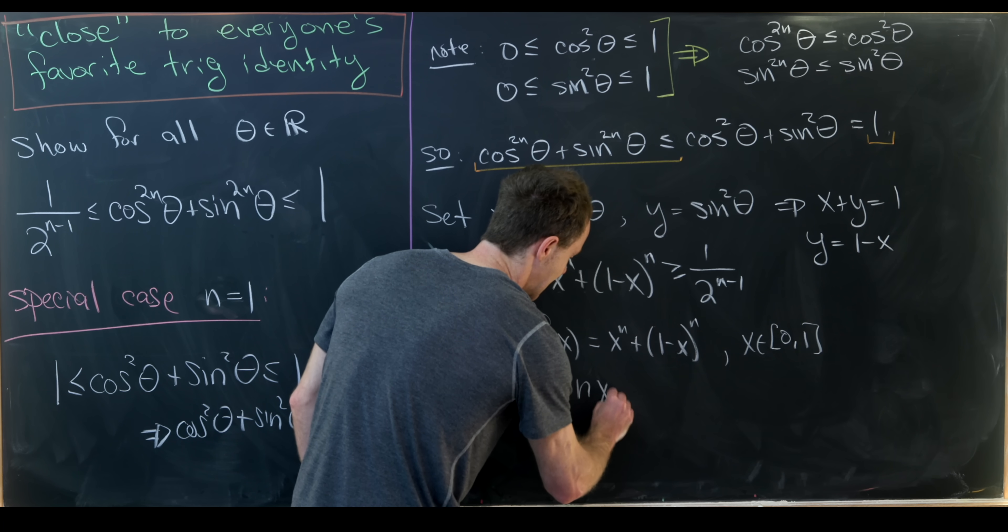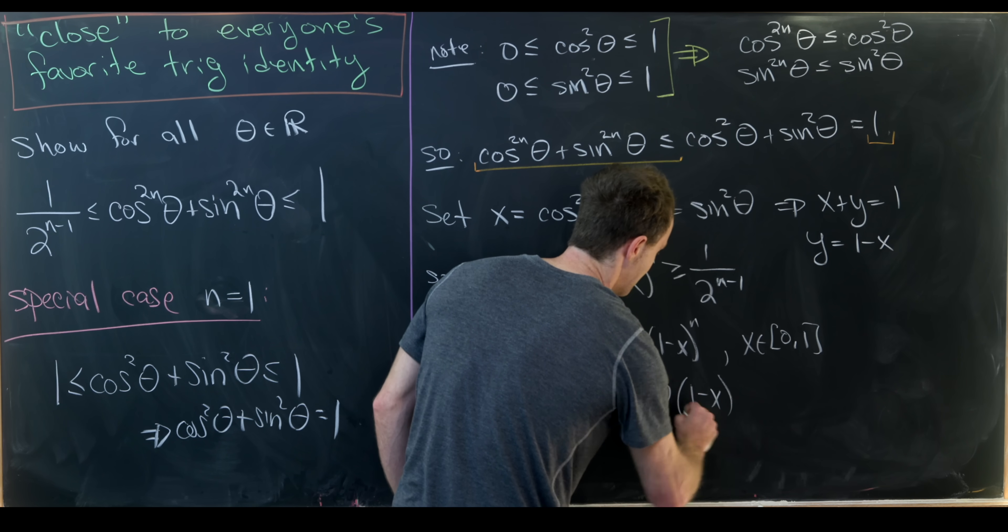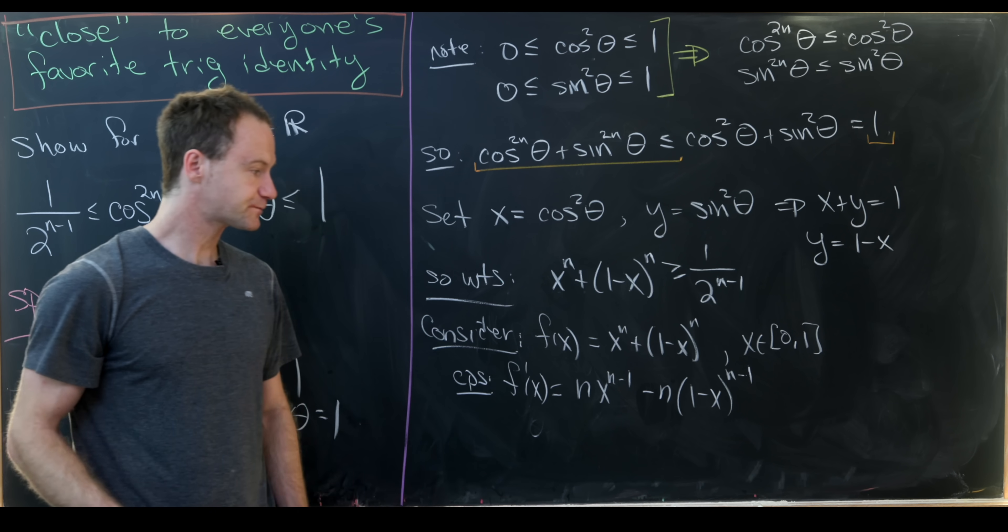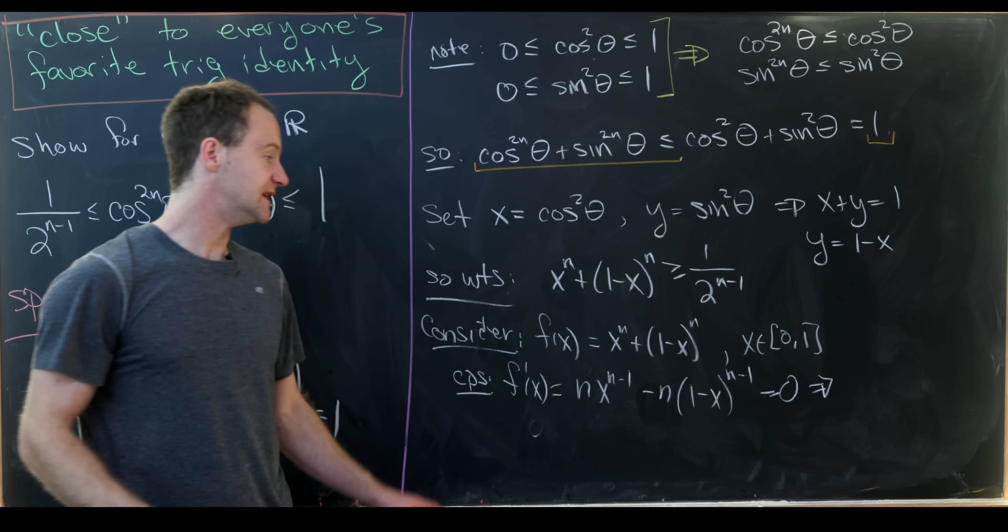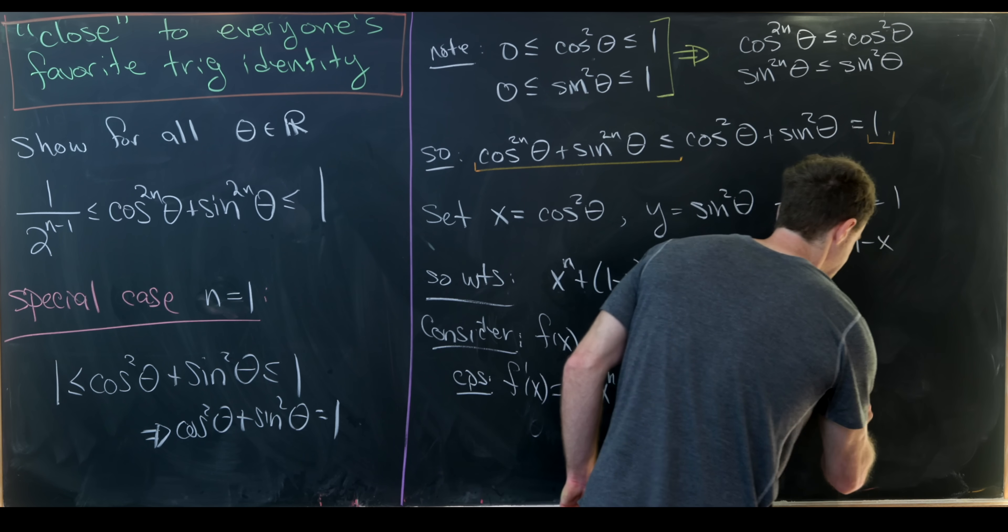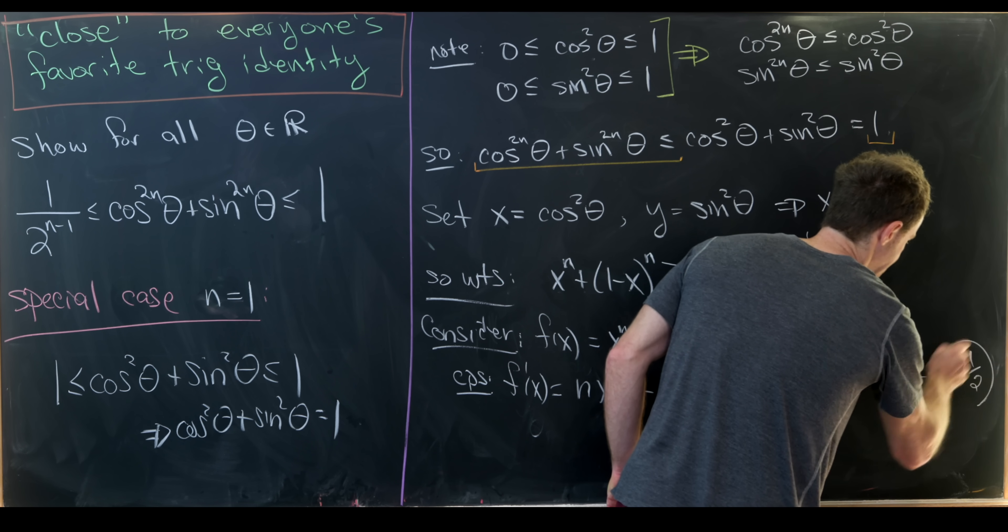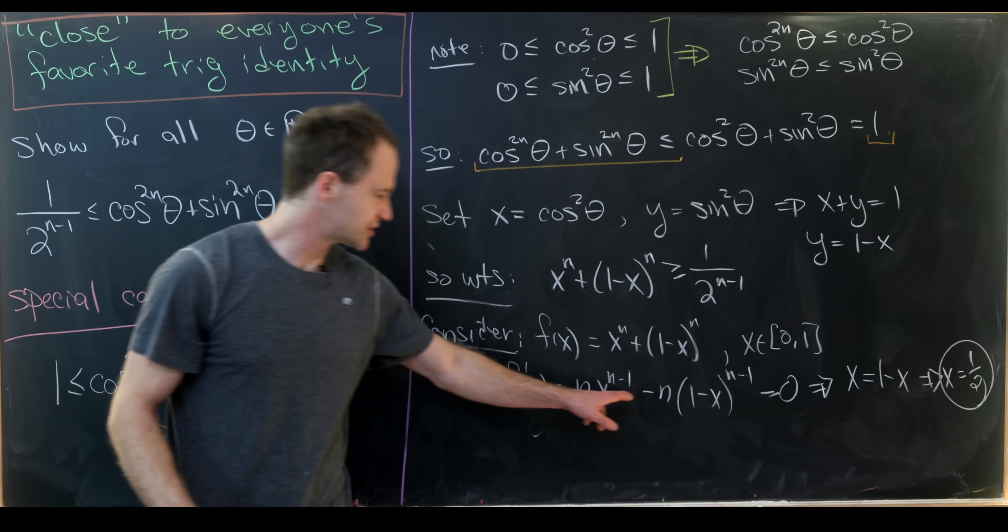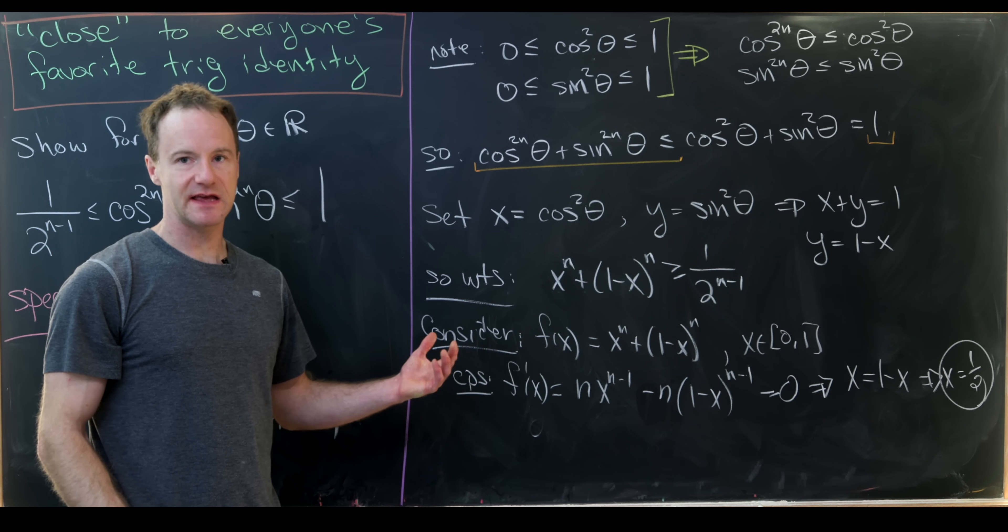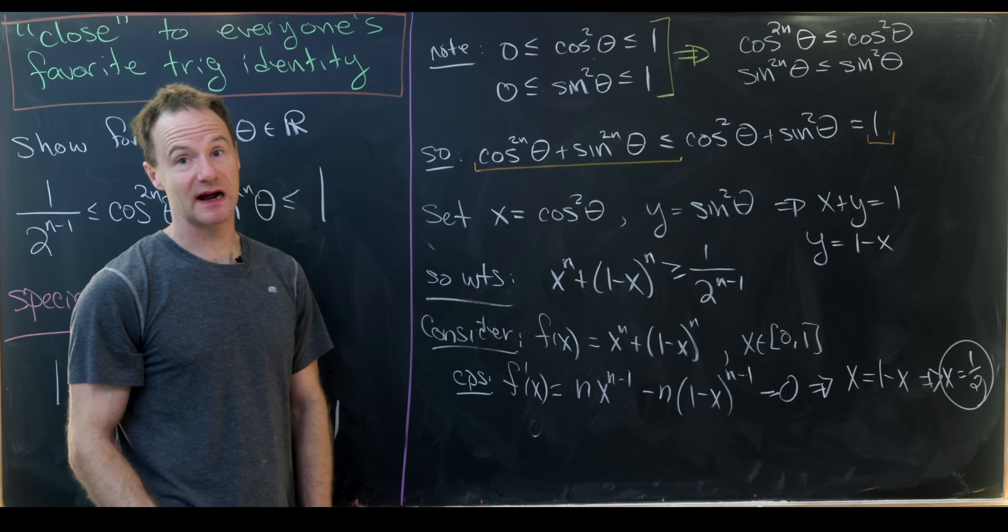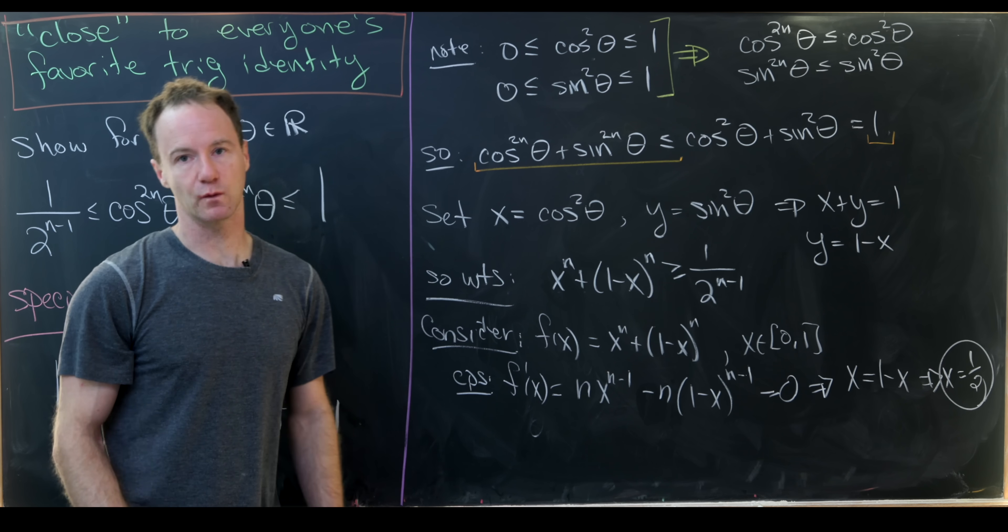So let's take the derivative of this. That's n times x to the n minus 1 minus n times 1 minus x to the n minus 1. So setting this equal to 0, we will immediately achieve that we need x to be equal to 1 minus x, which means x equals 1 half. Great. And so that's just from adding this thing to both sides of the equation, and then dividing by n, and then taking an n minus 1 root, which isn't problematic because x is between 0 and 1 here.